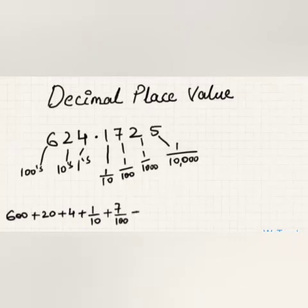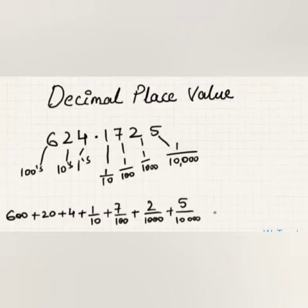Two in the one-thousandths place becomes two over one thousand, plus five in the ten-thousandths place becomes five over ten thousand — which equals 624.1725.